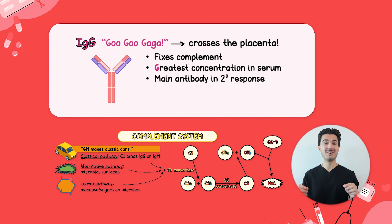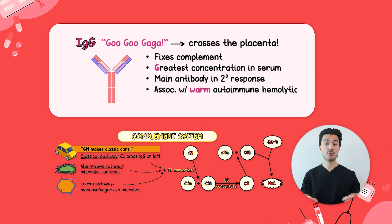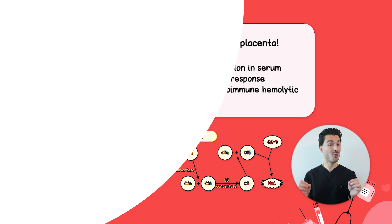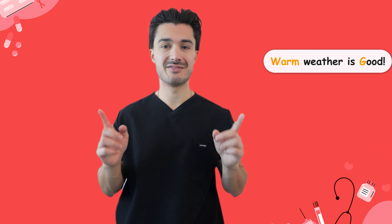Super high yield: IgG and IgM fix complement. Finally, IgG is associated with warm hemolytic anemia. Remember: warm weather is good, cold weather is misery — you'll never get those confused again.